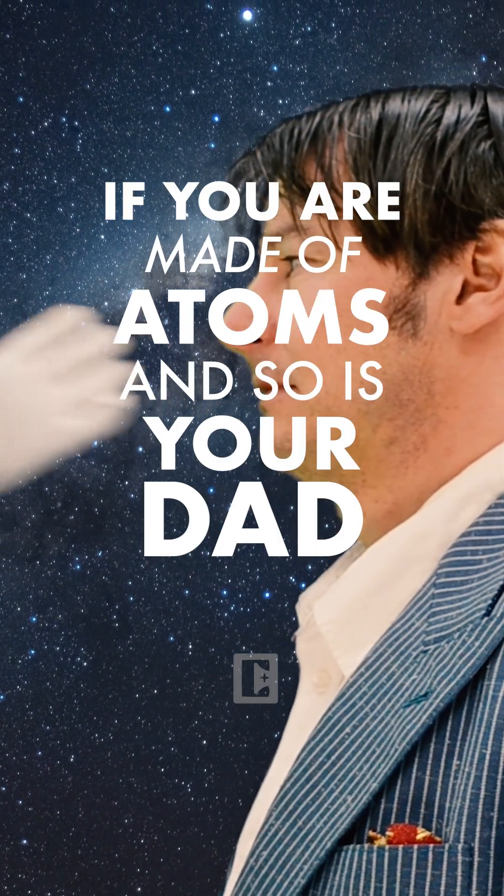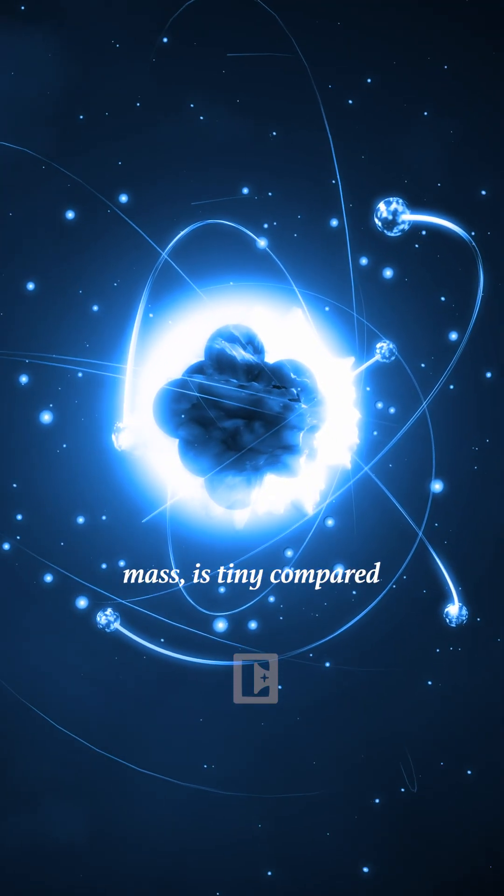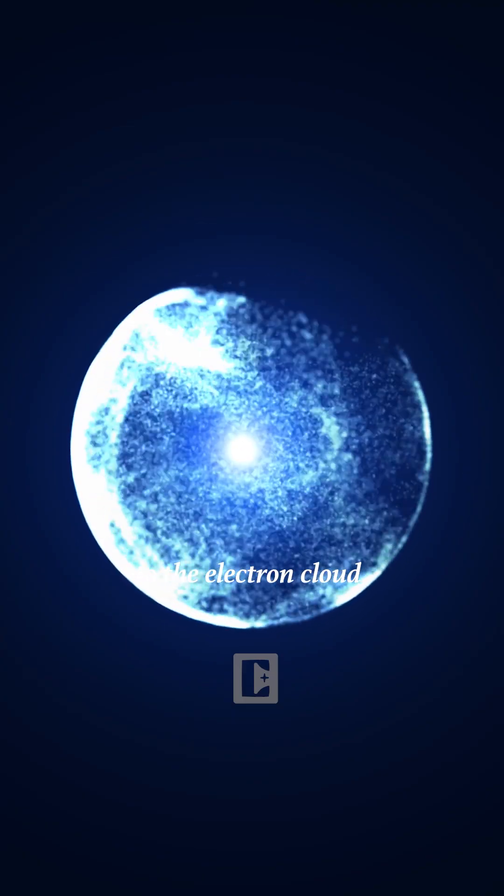If you are made of atoms and so is your dad, why doesn't your hand go through him when you slap him? Atoms are mostly empty space. Their nucleus, which contains nearly all the atom's mass, is tiny compared to the electron cloud.